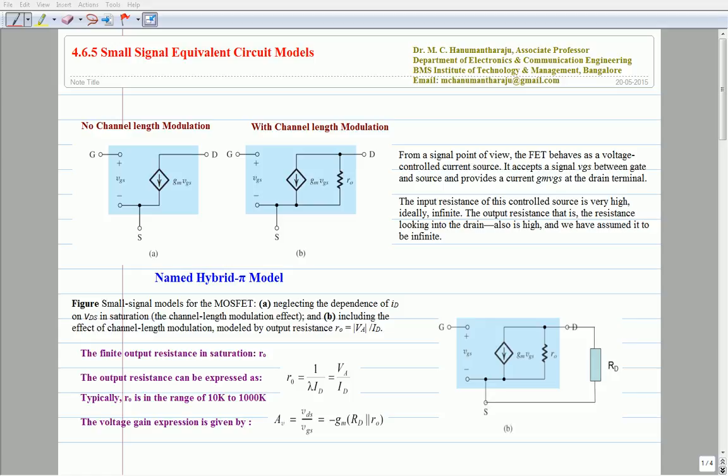Two such models have been derived here, one without channel length modulation effect and the other one with channel length modulation effect. These two models conventionally are referred to as hybrid pi-models.